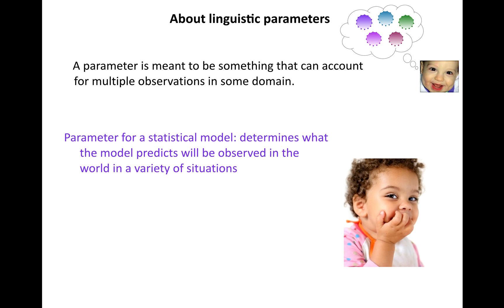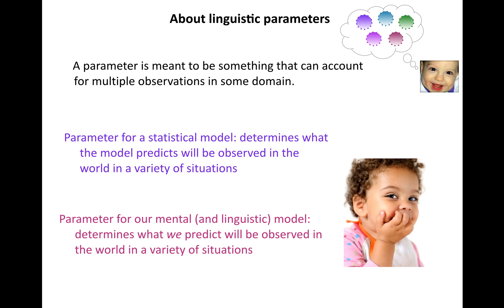A parameter for a statistical model determines what the model predicts will be observed in the world in a variety of situations. The parameter for our mental and linguistic model determines what we predict will be observed in the world in a variety of language situations.